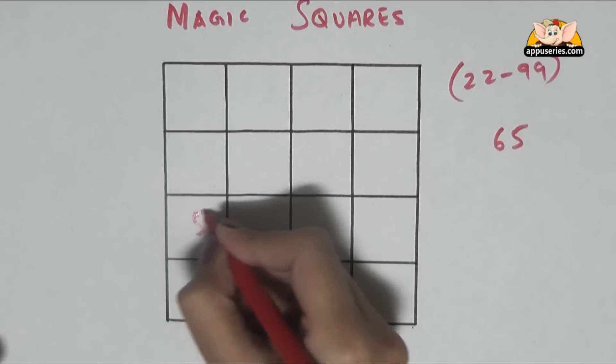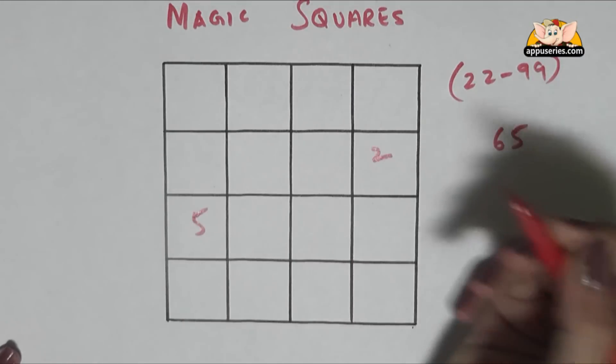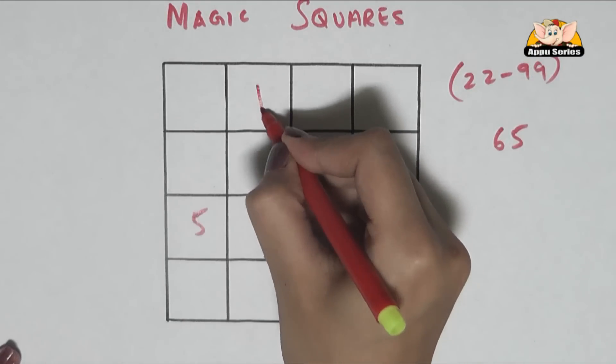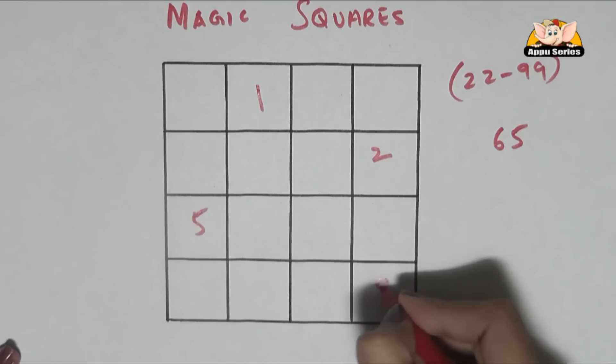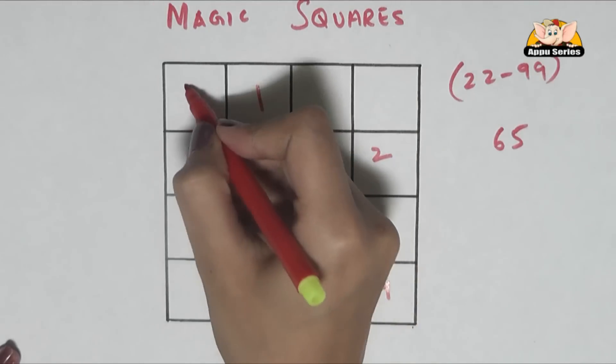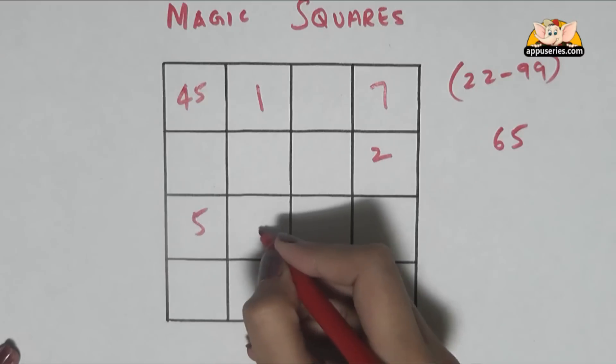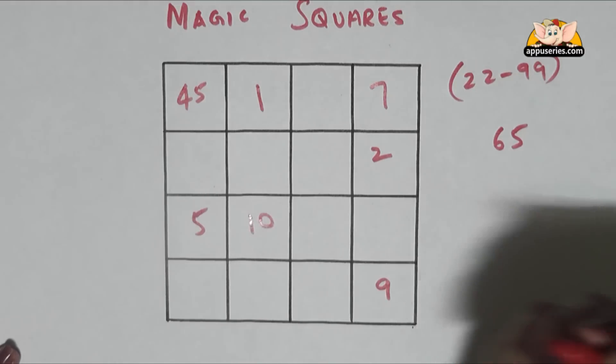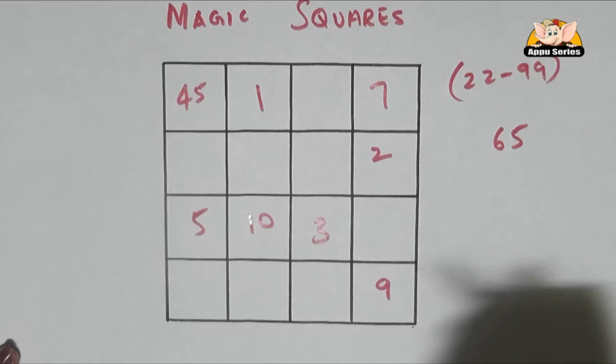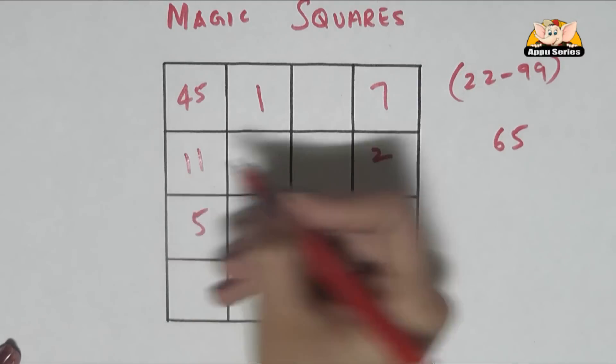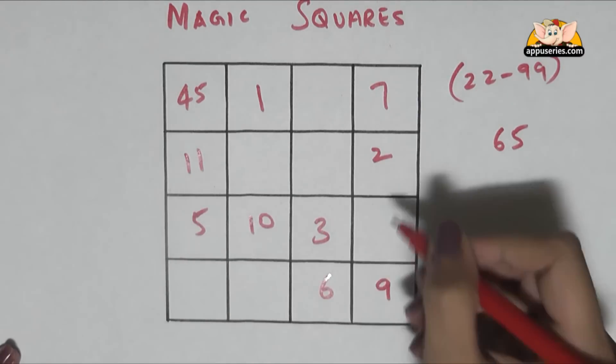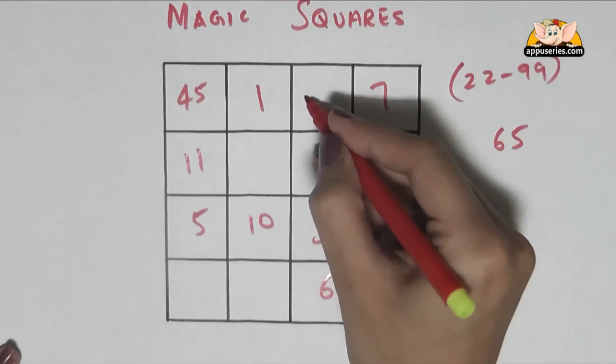So we'll write down 5 here, 2 here, 1 here, 9 here, 45 here, 7 here, 10, 3, 11, 6 here, 12, 8, 4.